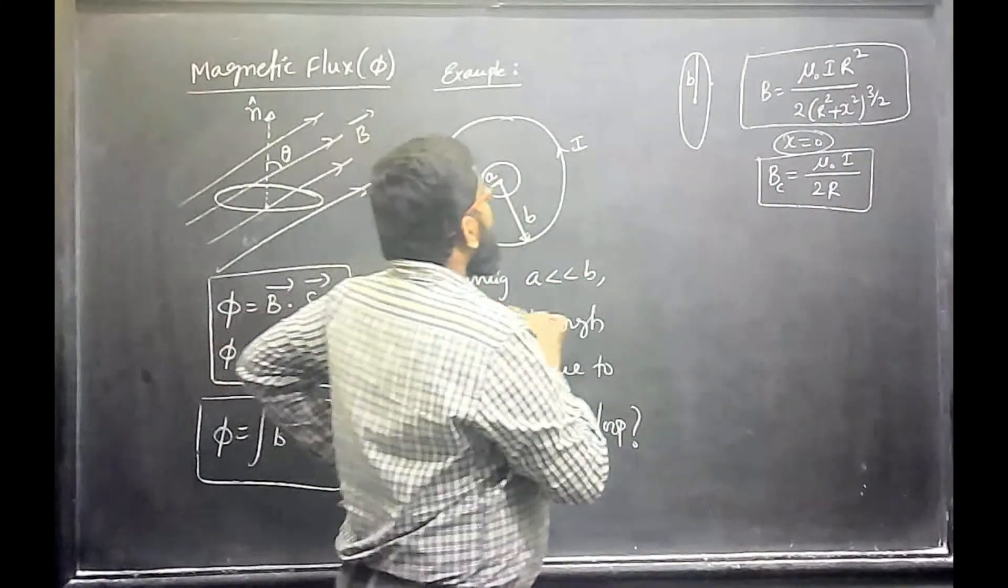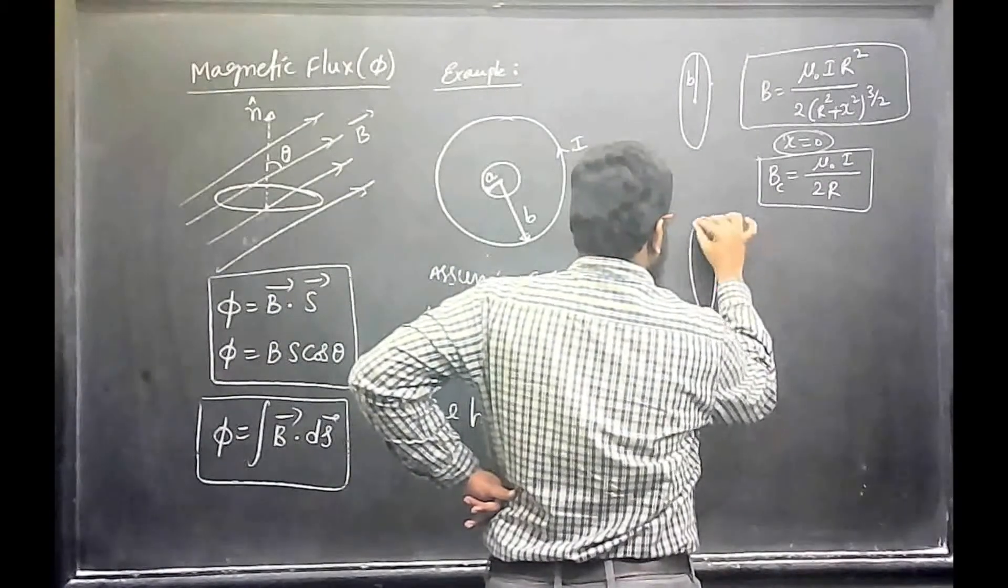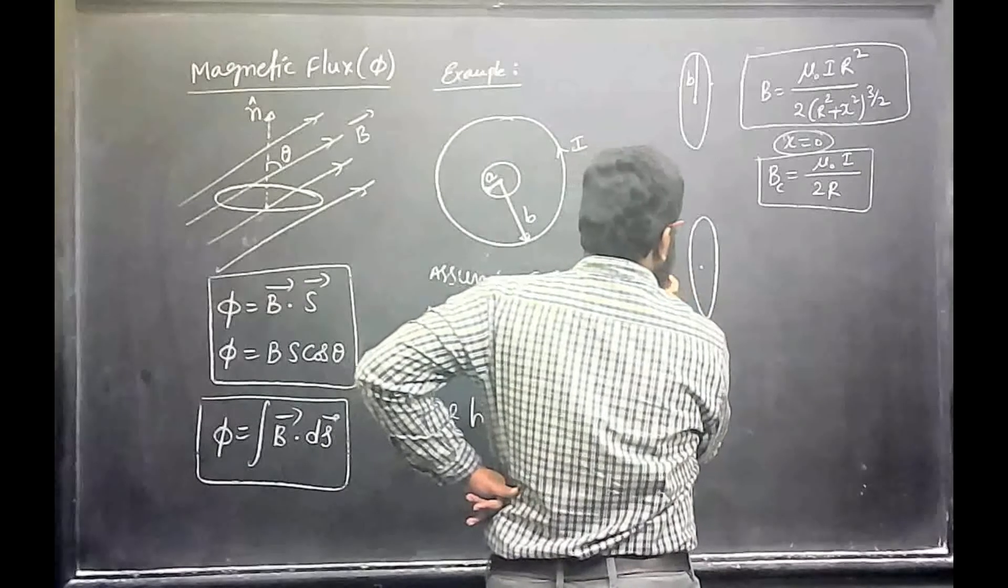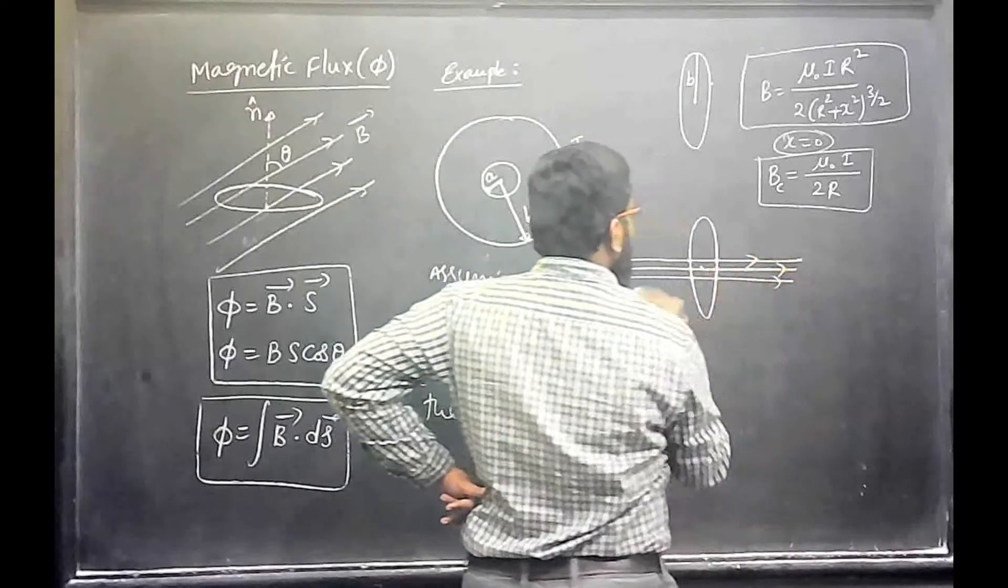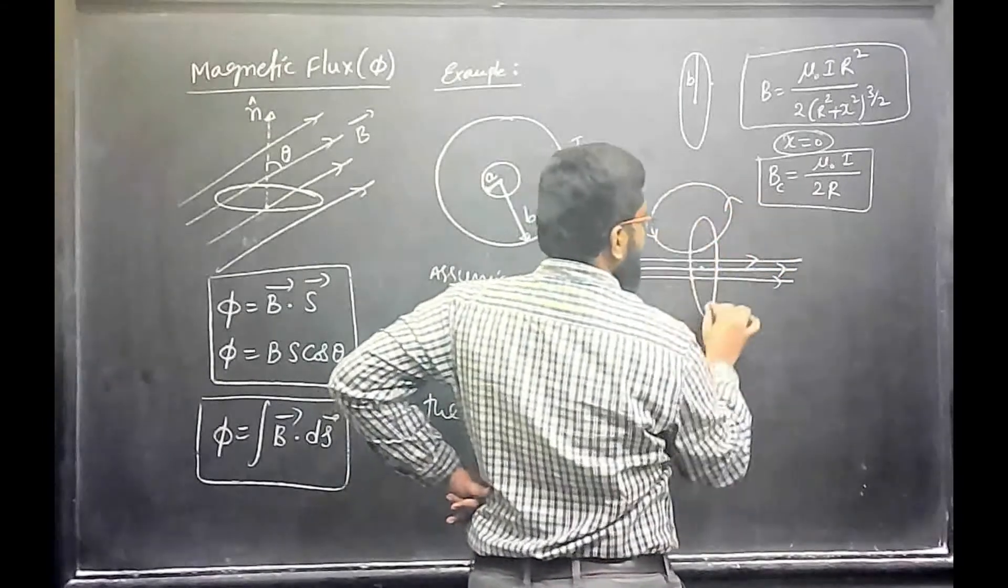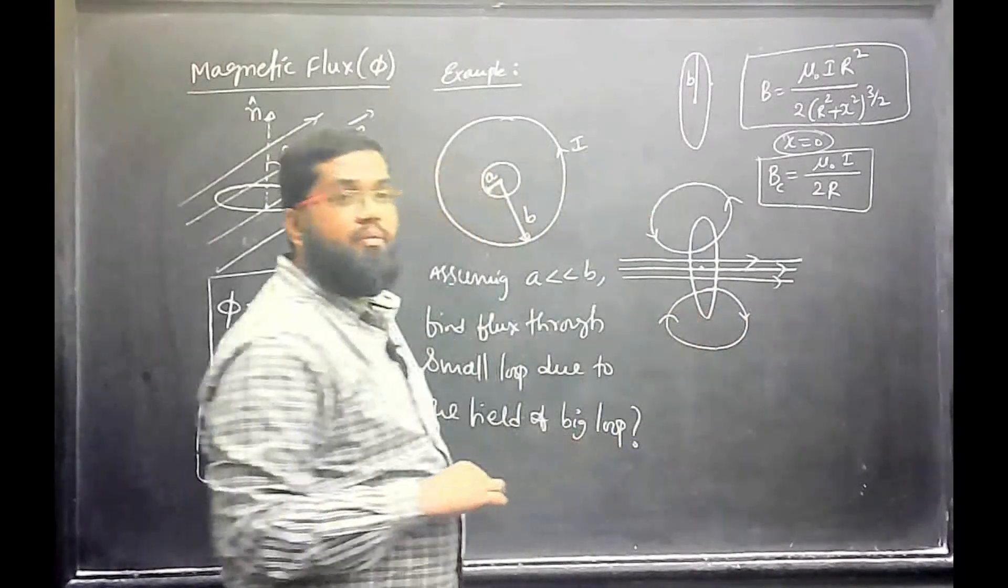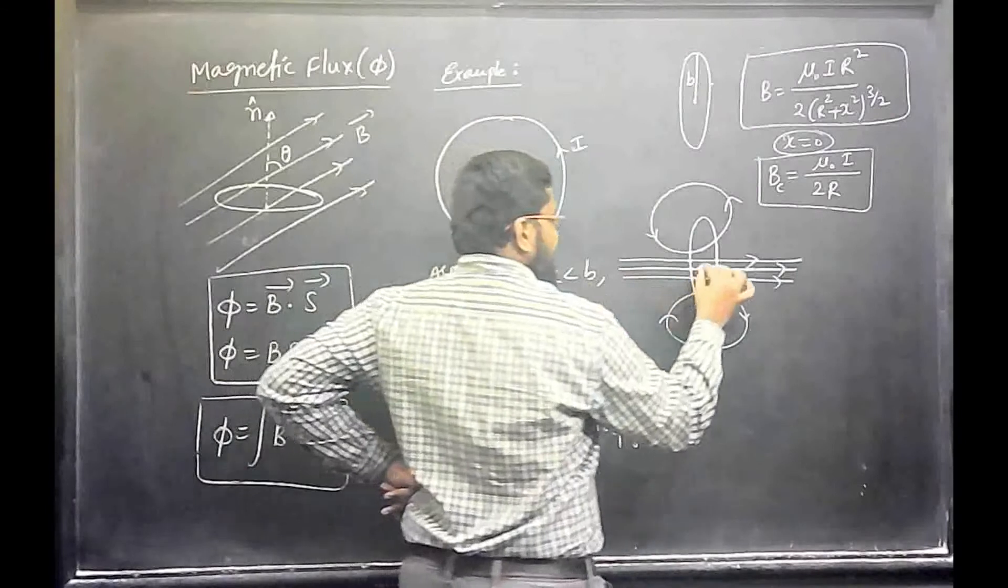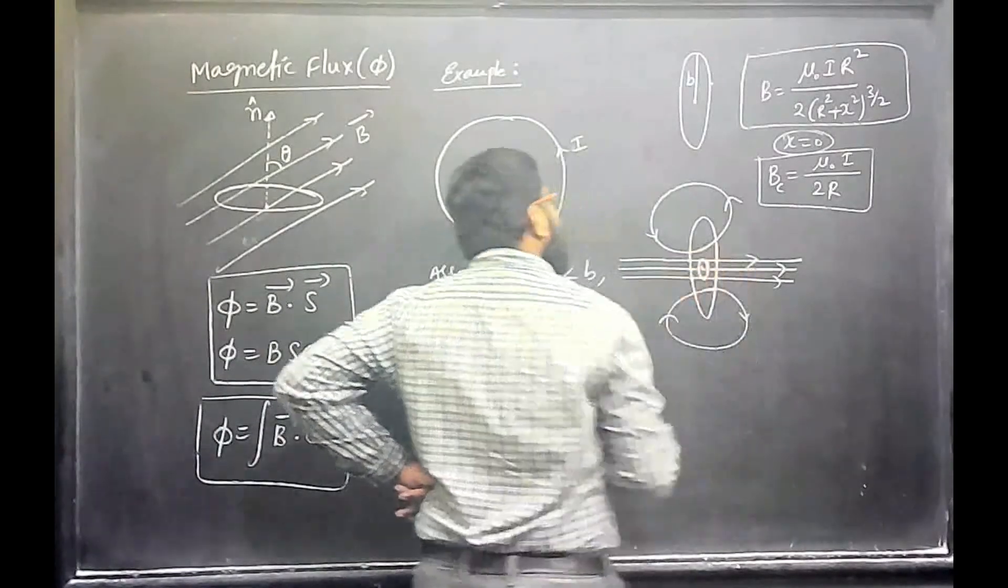So this is the nature of magnetic field lines I am drawing. At the center, the magnetic field lines will be like this. But my loop will be here. So, almost it is uniform.